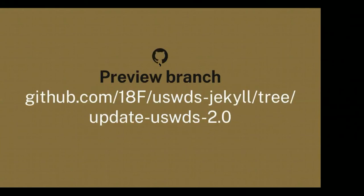I'll get started with the USWDS Jekyll theme version 5.0. I'm going to attempt to give a little preview of that. I have a preview branch — I'll copy this into the chat later. Essentially all of this is up in GitHub, in the 18F USWDS-Jekyll repo. The branch is UpdateUSWDS2, and this is what we'll be working on for this demo.